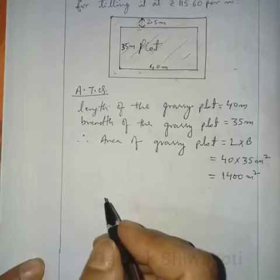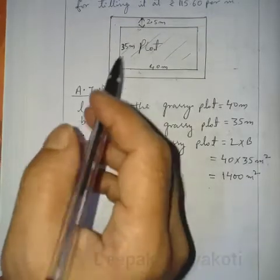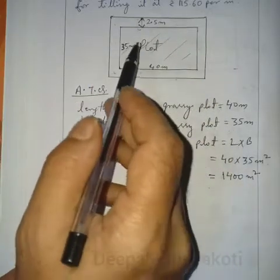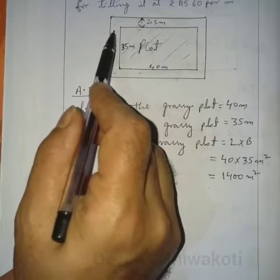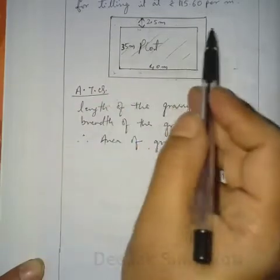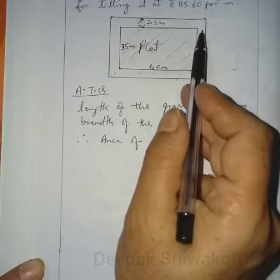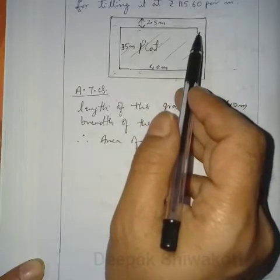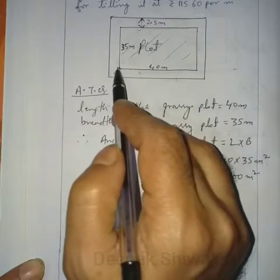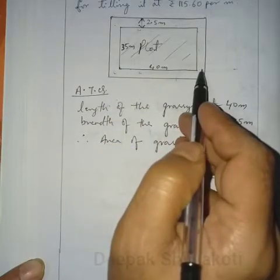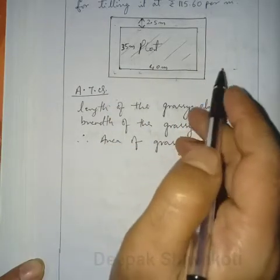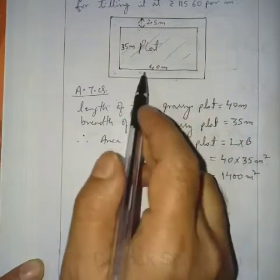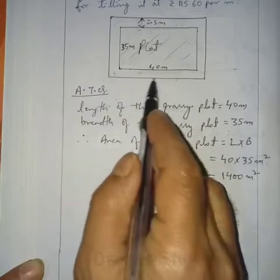The path is running around this rectangular plot, meaning 2.5 meter on this side and 2.5 meter on the other side — so the length is increased by 5 meter. Therefore, 40 plus 5 equals 45. The length of the outer rectangle including the path is 45 meter.